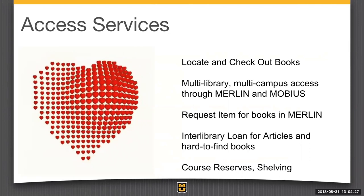Other things in Access Services include interlibrary loans. If we don't have the book or article that you want, we can go to other libraries all over the world and request a copy. The last thing in Access Services that you might not think of, but is very important, is shelving. We have people full time who shelve books. In this building, we have the problem of having more books than we have shelves, so we have overflow areas and we are working on that problem.